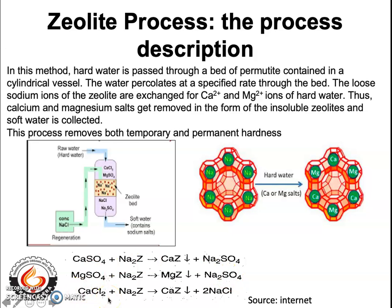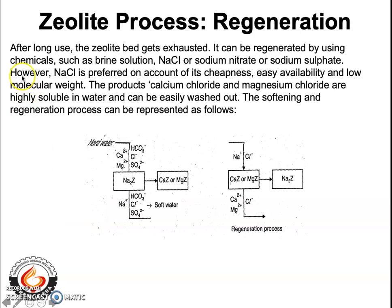After long use, the zeolite bed gets exhausted. It can be regenerated using brine solution — concentrated sodium chloride — or other chemicals like sodium nitrate or sodium sulfate. Sodium chloride is preferred on account of its cheapness, easy availability, and low molecular weight.